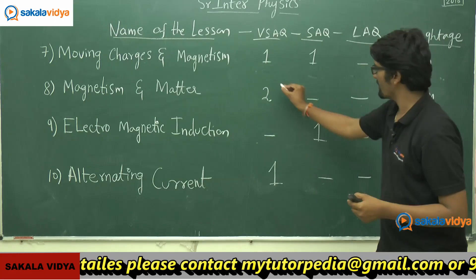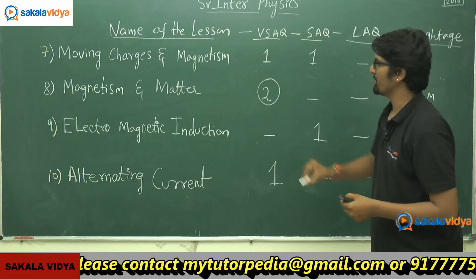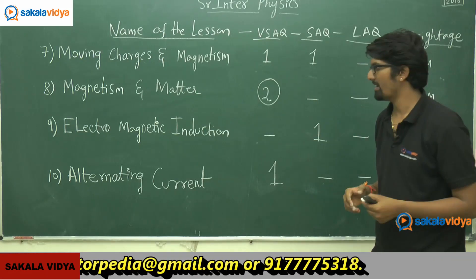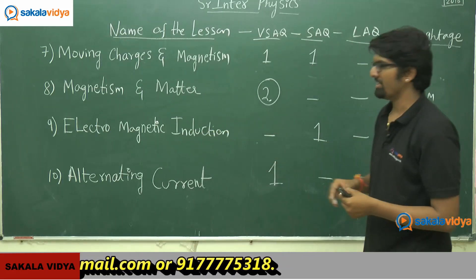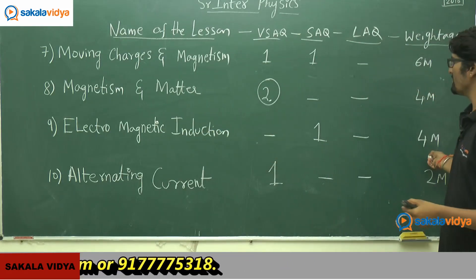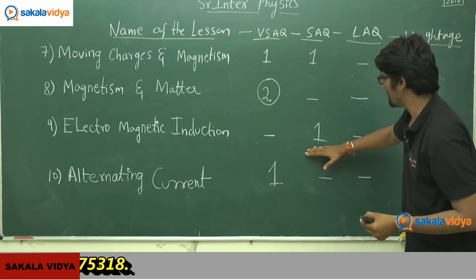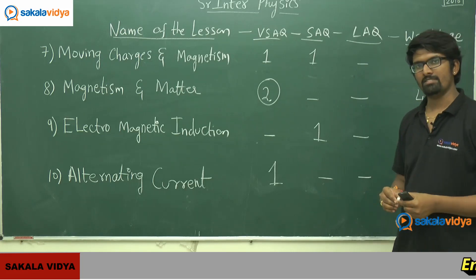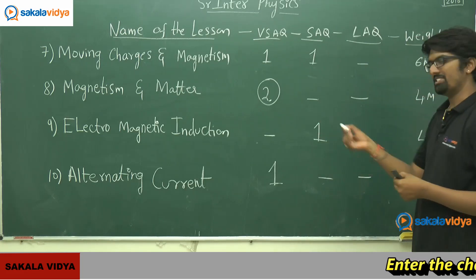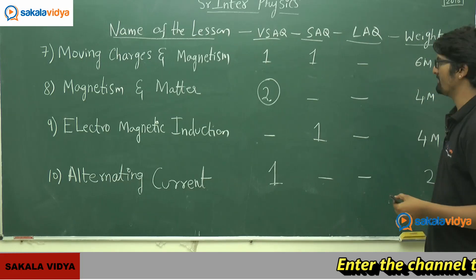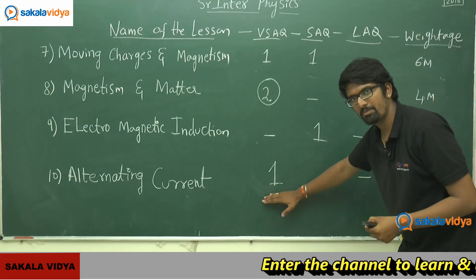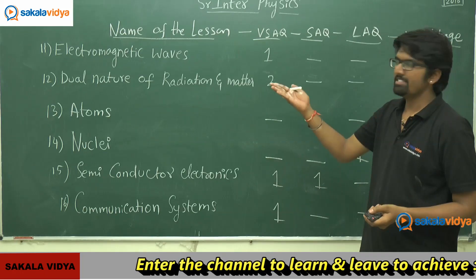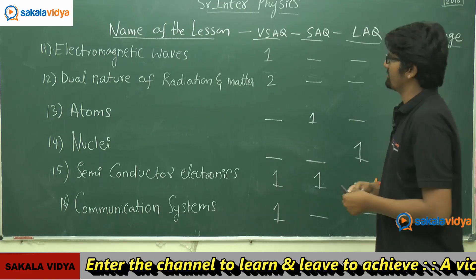The eighth chapter, Magnetism and Matter, has a weightage of 4 marks — this chapter is very important as we are going to get two VSAQs, no SAQ, and no LAQ. The ninth chapter, Electromagnetic Induction, carries 4 marks — one SAQ, no VSAQ, and no LAQ. The tenth chapter, Alternating Currents, has a weightage of 2 marks — one VSAQ, no SAQ, and no LAQ.